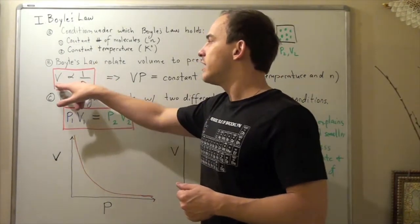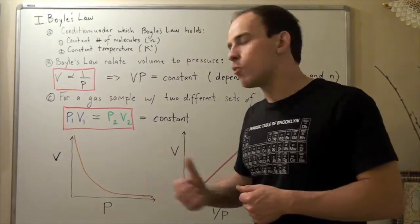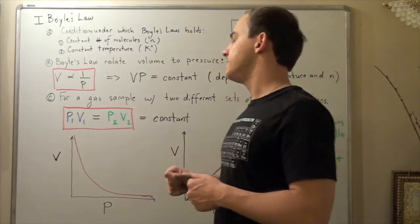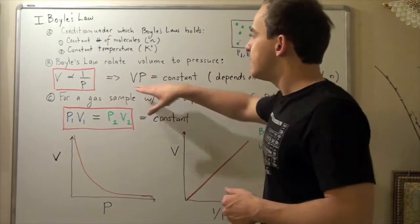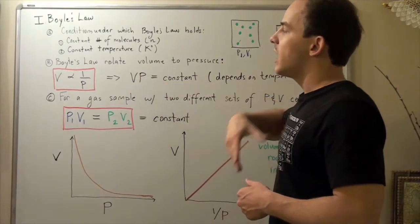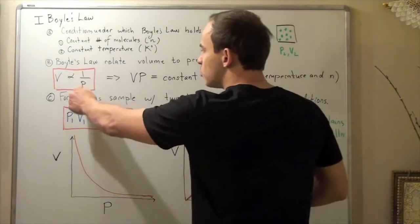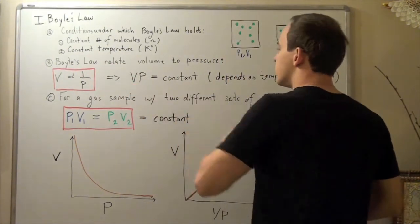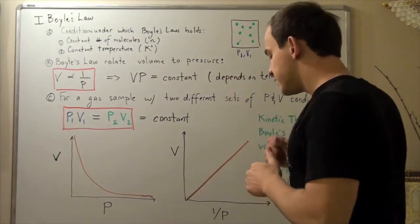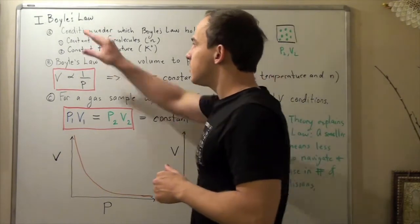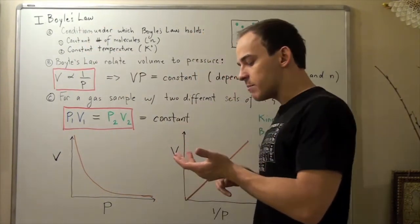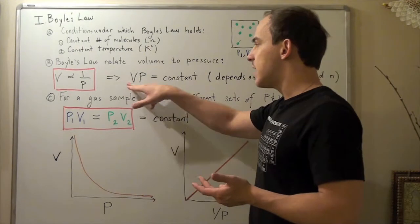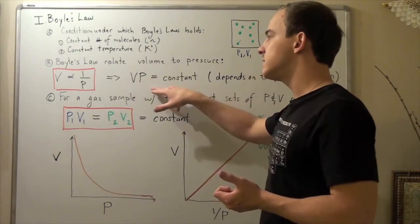Or, said another way, volume is inversely proportional to 1 over P. And we can represent this as VP equals constant. In other words, if we rearrange this and multiply by some constant, we get this formula. And what this basically says is that under these conditions of constant temperature and constant number of moles, V times P will always be a constant.